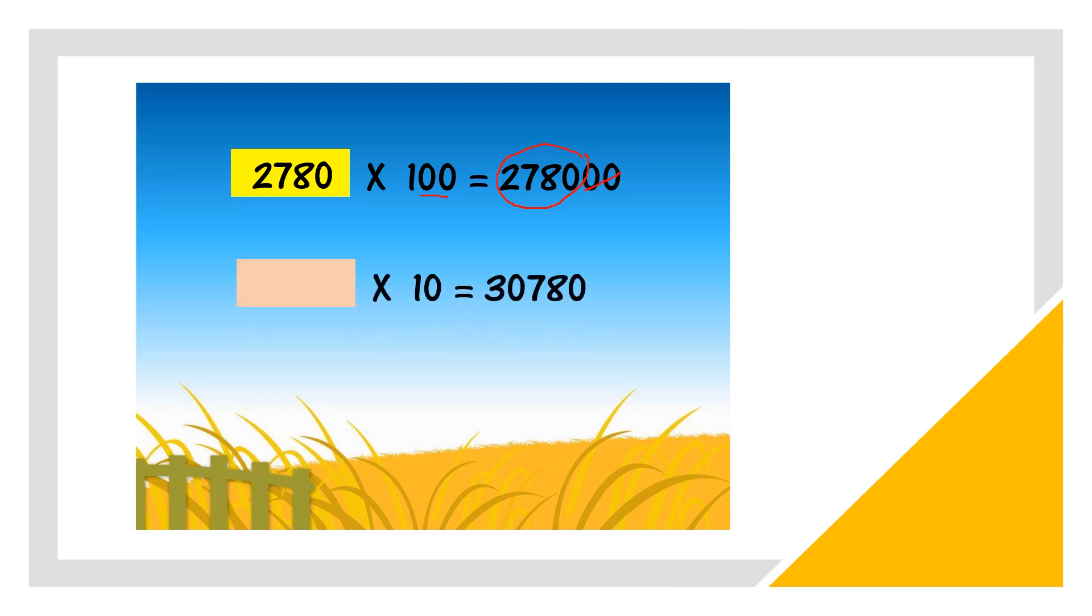Look at next one. Now, times 10. Times 10, 1 zero. 10 has 1 zero. 10 ada 1 sifar. So we cut 1 zero at the answer here. So the digits left are 3, 0, 7, 8. So this will be answer 3,078.